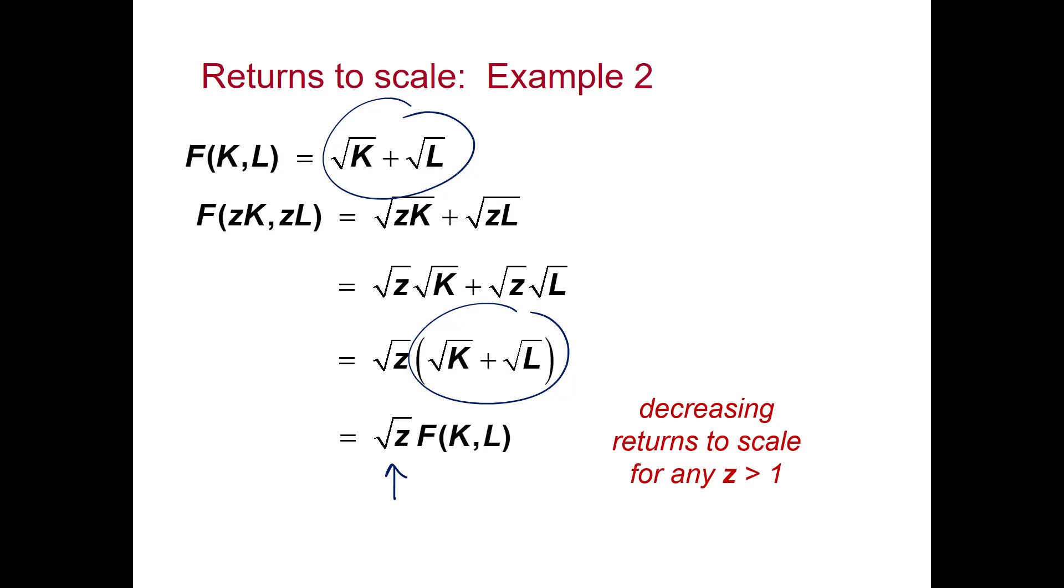So if we double both capital and labour, output will increase by a little more than 1.4. In this case, we'll have decreasing returns to scale.